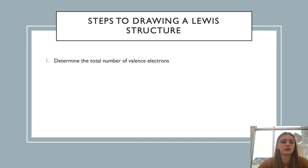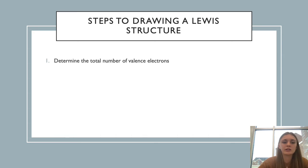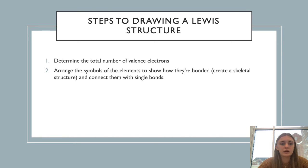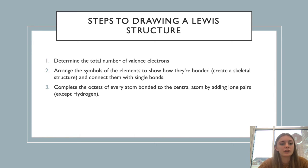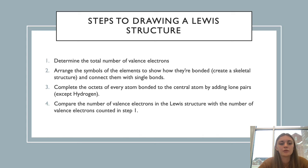The steps to drawing a Lewis structure are: first, determine the total number of valence electrons by looking at the periodic table and adding up each element's valence electrons in the compound. Then arrange the symbols to show bonding — create a skeletal structure connecting atoms with single bonds. Next, complete the octets of every atom bonded to the central atom by adding lone pairs, except for hydrogen, which will only ever have two valence electrons.